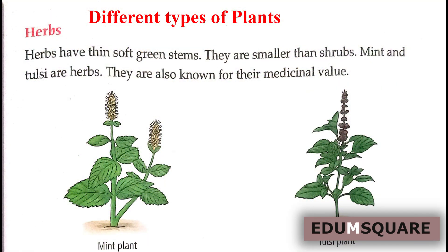The third type is herbs. Herbs have thin, soft, green stems. They are smaller than shrubs. Mint and tulasi are herbs. They are also known for their medicinal value. Some herbs you can name: mint, tulasi, coriander, wheat, paddy. Many herbs are known for their medicinal value, like tulasi.